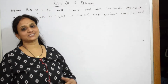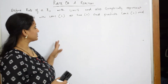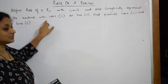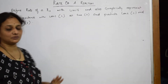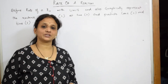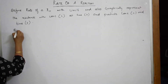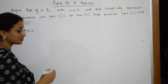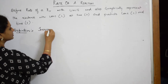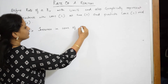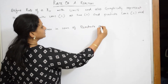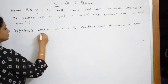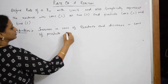Let us start with this concept — rate of the reaction. They have given us: define rate of the reaction with units and also graphically represent the reactants with concentration C versus time T, and products concentration C versus time T. They have given me a lot of things to explain. First, I have to define this. When I start with the definition of rate of the reaction — what actually is rate of the reaction? It is the change in concentration of reactants and products in unit time.